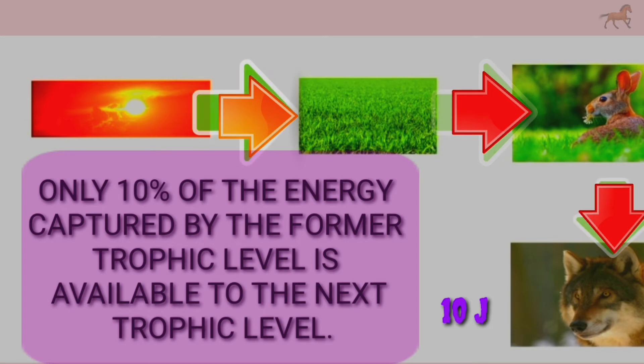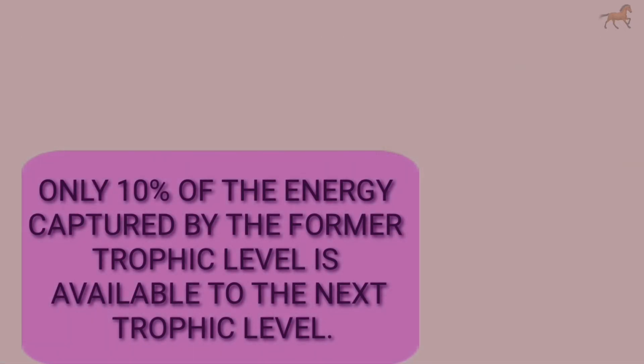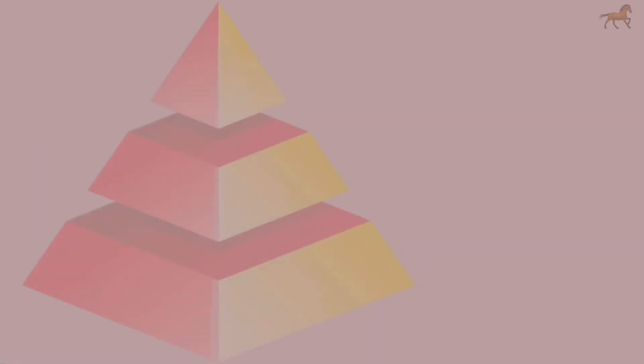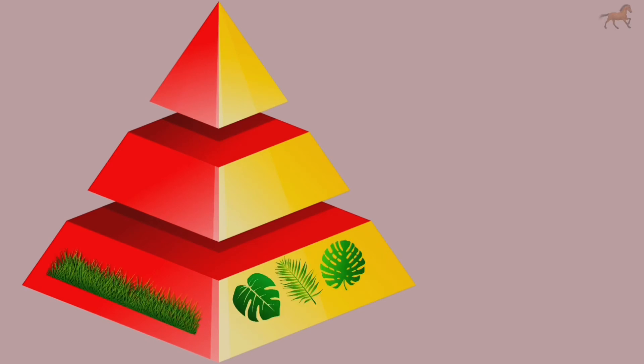So we can conclude that almost 90% of the energy is lost in the form of heat energy, and only 10% of the energy captured by the former trophic level is available to the next trophic level.